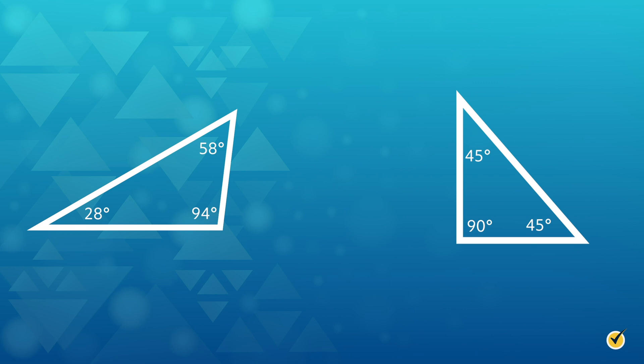Before we go, how about you give it a try? Pause the video and identify these two triangles by choosing either acute, right, or obtuse, and then choosing equilateral, isosceles, or scalene.